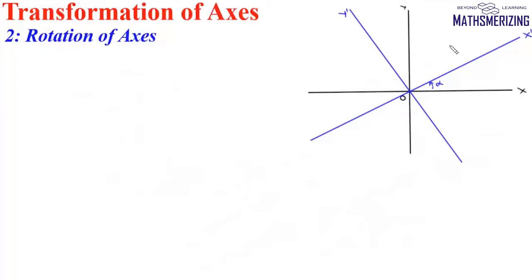There are many ways to solve these problems, but generally we use three common methods. The first method is to use formulas. Suppose we have any point P whose coordinate is X and Y.